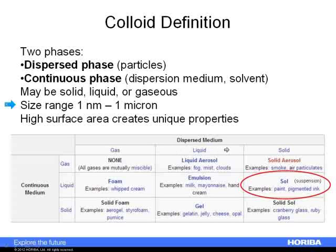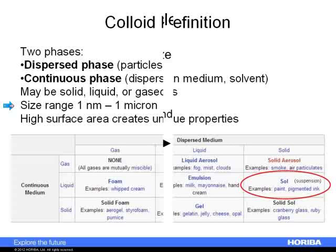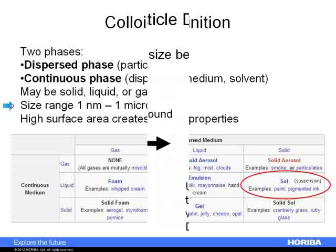A colloid can be any mixture of dispersed and continuous phases. What we're going to talk about today are really suspensions, or sols — a word used more by colloid chemists — of gold particles in the range from a nanometer to a micron. Often today you'll hear me use the phrase colloidal gold, but we could also talk about them as gold nanoparticles.